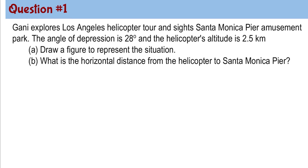Question number one. Ghani explores a Los Angeles helicopter tour inside Santa Monica Pier Amusement Park. The angle of depression is 28 degrees and the helicopter's altitude is 2.5 kilometers. A, draw a figure to represent the situation. And B, what is the horizontal distance from the helicopter to Santa Monica Pier?